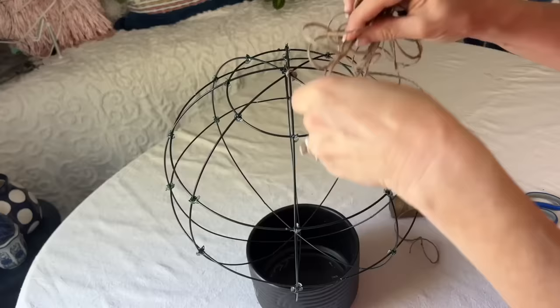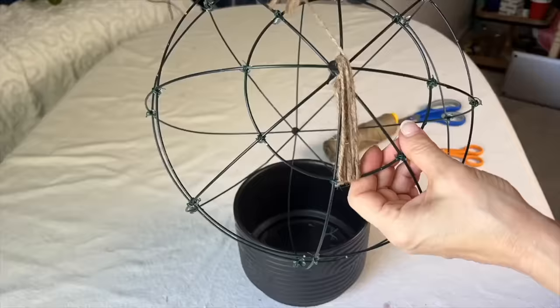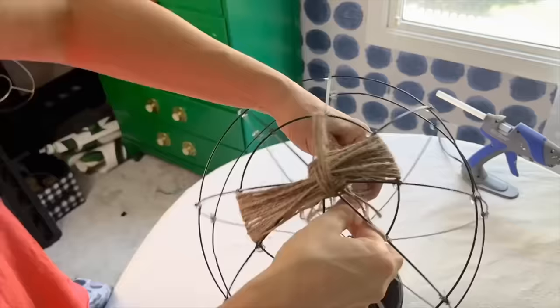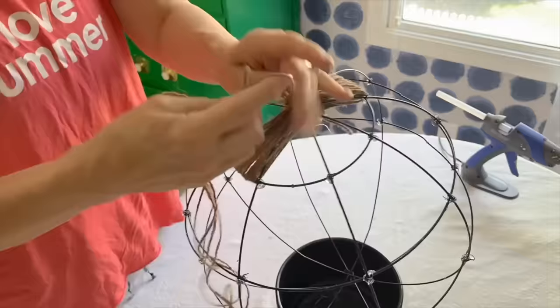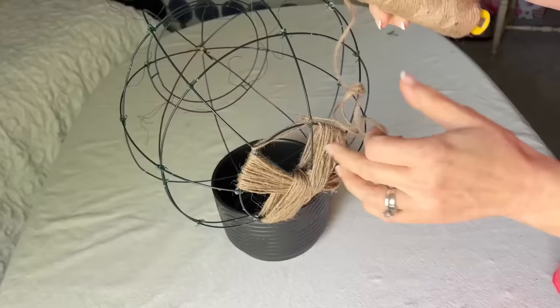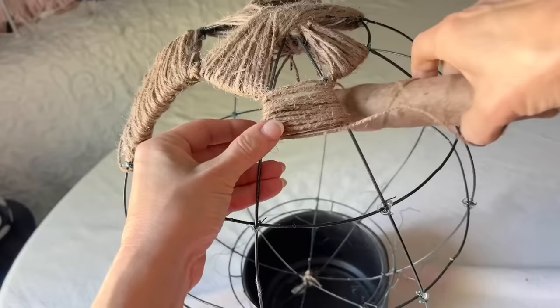Starting at the top of the globe, tie a piece of jute twine in a secure knot. Start to loop and weave the jute twine over and under. Once finished with one section, skip the section beside it and start to weave the jute in the next section in the same direction.